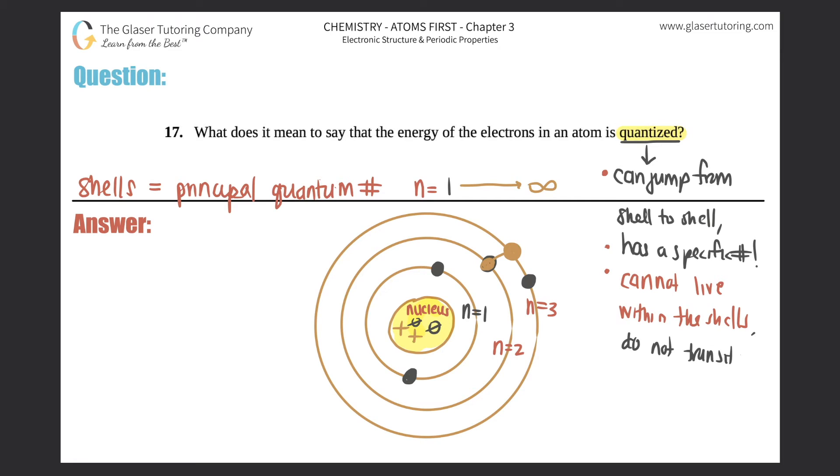And also, they do not transition smoothly, which means that they don't just glide over and take their time. They literally jump. So they hop—boop—to go from n=2 to 3 and vice versa. All right, so basically all of these is what quantized means.